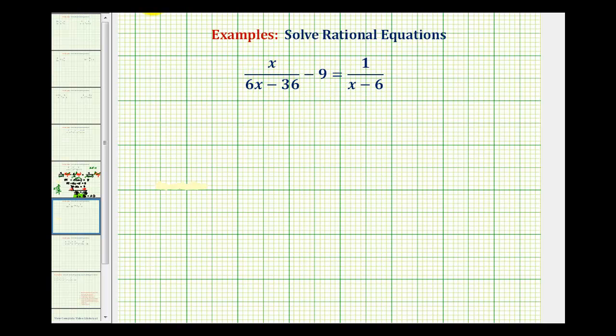So for this first fraction, we'll write this as x divided by the quantity, well, 6x minus 36 will factor. These two terms share a common factor of six. So we can write this as six times the quantity x minus six.